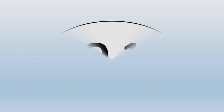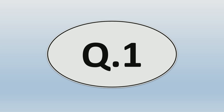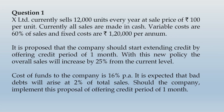Let us get started with question number one. X Limited currently sells 12,000 units every year at a sales price of rupees 100 per unit. Currently all sales are made in cash. Variable costs are 60 percent of sales and fixed costs are rupees 1,20,000 per annum. It is proposed that the company should start extending credit by offering credit of 1 month, with this new policy overall sales will increase by 25 percent. Cost of funds to the company is 16 percent per annum. It is expected that bad debts will arise at 2 percent of total sales. Should the company implement this proposal?